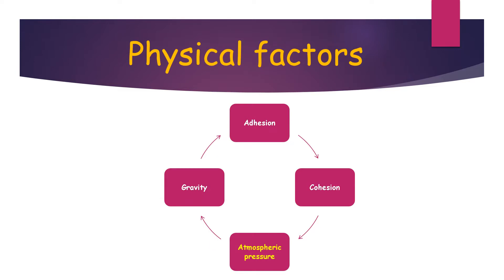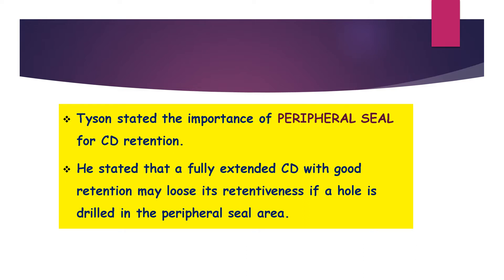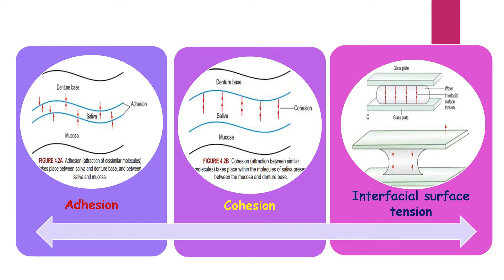Coming to the physical factors, Hall and Tyson described the importance of physical factors of retention. According to Hall, the important factors for complete denture retention are adhesion, cohesion, gravity, and atmospheric pressure. Hall proposed that atmospheric pressure is essential for complete denture retention. Tyson stated the importance of peripheral seal, noting that a fully extended complete denture with good retention may lose its retentiveness if a hole is drilled in the peripheral seal area.